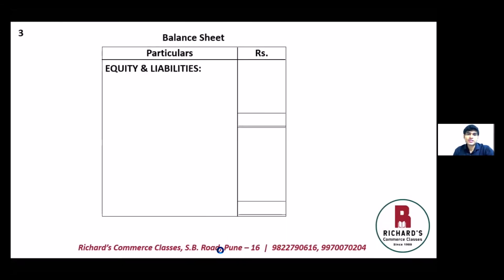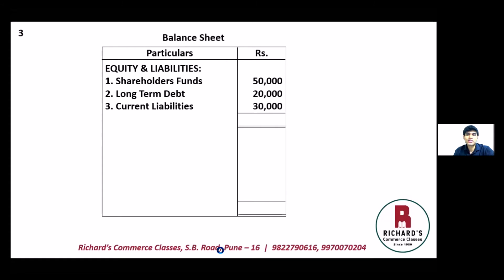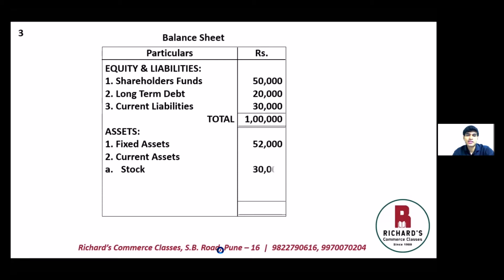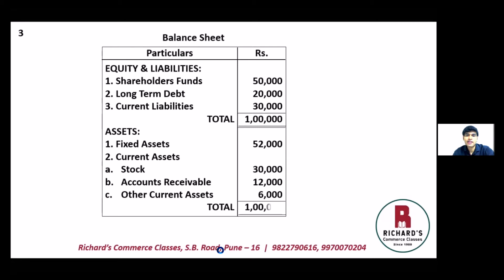Preparing the balance sheet in vertical form. Equity and liabilities: shareholders funds 50,000; long-term debt 20,000; current liabilities 30,000. Balance sheet total: one lakh. On the asset side: fixed assets 52,000. Current assets breakdown — stock 30,000, accounts receivable 12,000, other current assets 6,000. Total assets also equal one lakh. The balance sheet tallies.